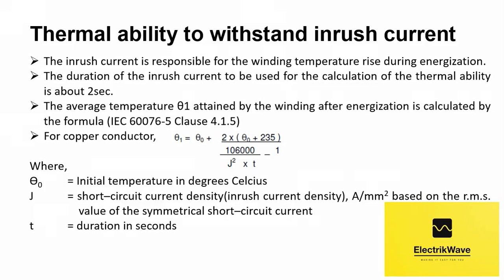The inrush current is responsible for the winding temperature rise during energization. The duration of the inrush current to be used for the calculation of the thermal ability is about 2 seconds. The average temperature theta_1 attained by the winding after energization is calculated by the formula as per IEC 60076-5 clause 4.1.5. For copper conductor, the formula is given here.